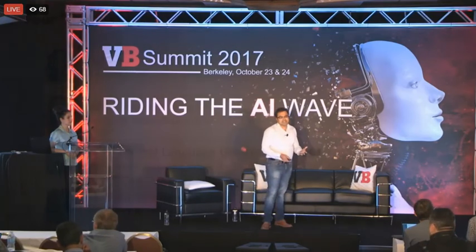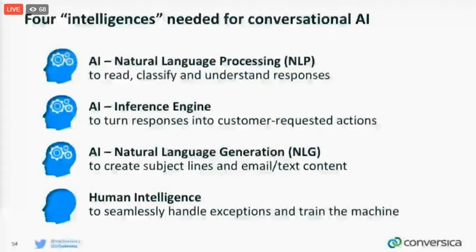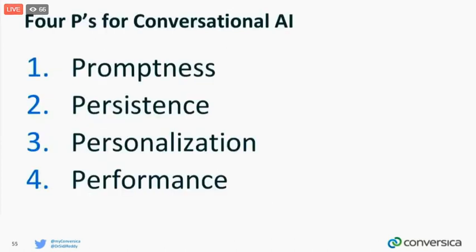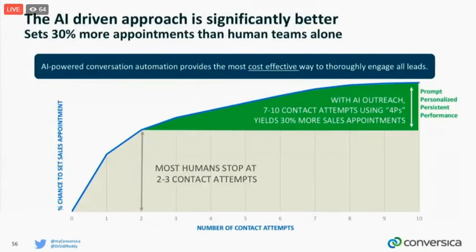There are four intelligences for conversational AI as we see it: natural language processing to read, classify, and understand responses; an inference engine to turn responses into customer-requested actions; natural language generation to create messages; and human intelligence. Our AI is prompt, persistent, personalized, and performs equal to humans. We showed that using our AI-driven approach, we were able to set 30% more appointments than those involving only human teams.